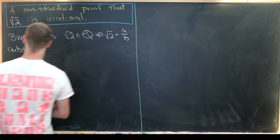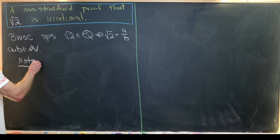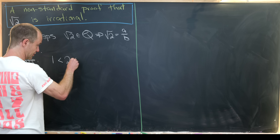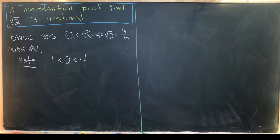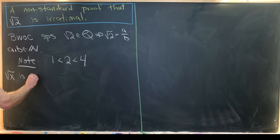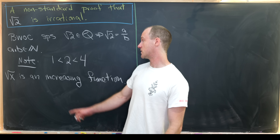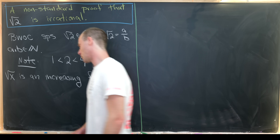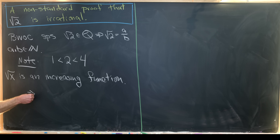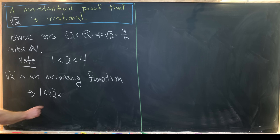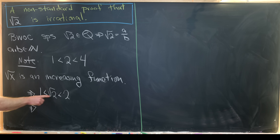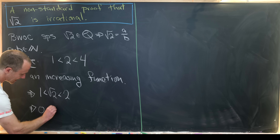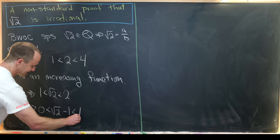Next up, we're going to consider the following inequality. Note that one is most definitely less than two, which is less than four. Since the square root of x is an increasing function, applying it to all parts of this compound inequality doesn't change the inequality. That tells us that the square root of one, which is one, is less than the square root of two, which is in turn less than the square root of four, which is two. From here, we subtract one from all parts, giving us zero is less than the square root of two minus one, which is less than one.